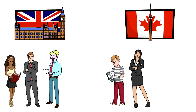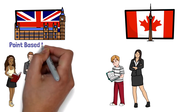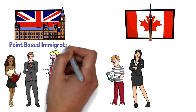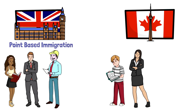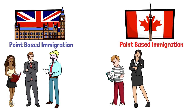More importantly, for skilled workers: after Brexit, UK announced it would change to a points-based immigration system, inspired by Canada and Australia. Points are awarded based on factors such as age, education, and work experience. Canada has already been using this system under the Express Entry program for the last five years. I've created a detailed video on UK's points-based system — the link is in the description.